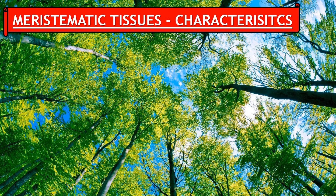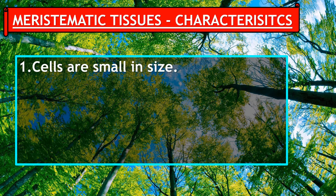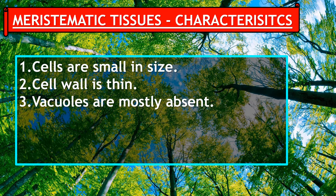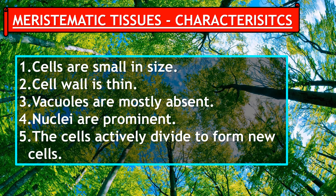Meristematic tissue characteristics: cells are small in size, cell wall is thin, vacuoles are mostly absent, nuclei are prominent, and the cells actively divide to form new cells.